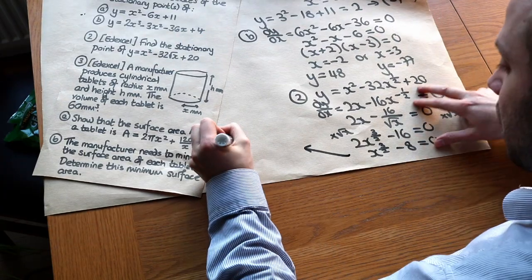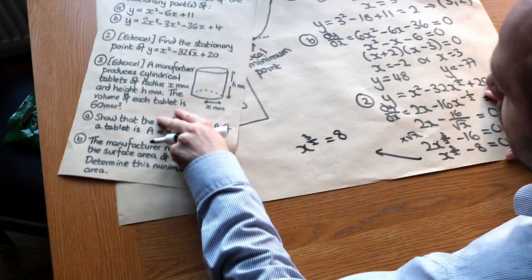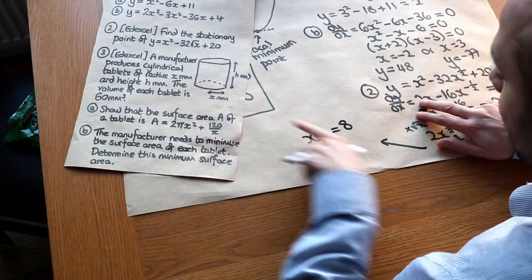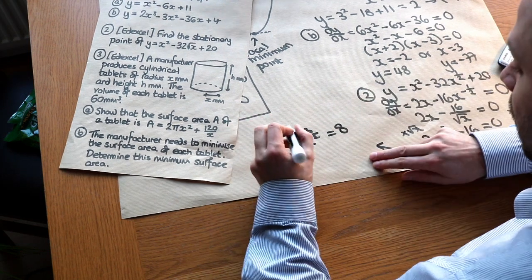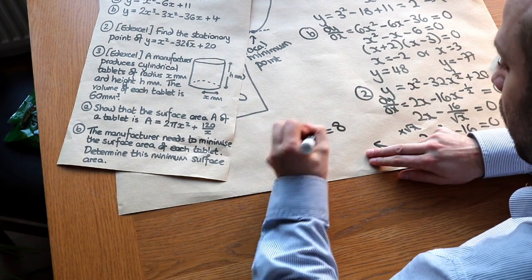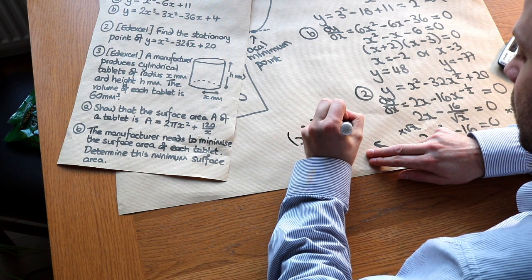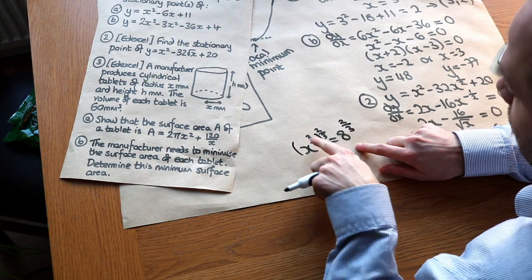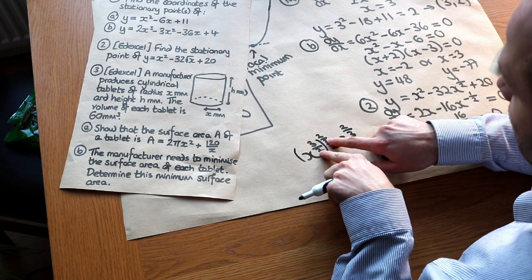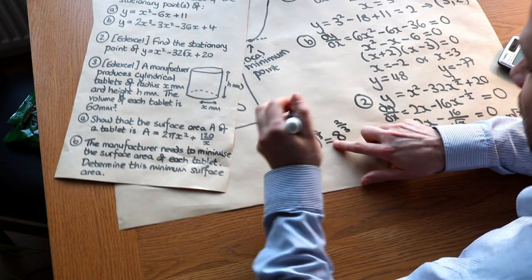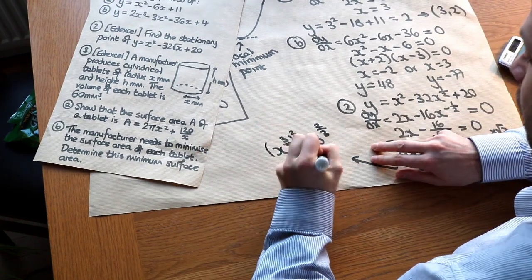So x^(3/2) = 8. To get rid of that power, we raise both sides to the power of the reciprocal, which is 2/3. By the laws of indices, x^(3/2 × 2/3) = x^1 = x. And 8^(2/3) = 4. So x = 4.